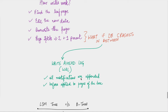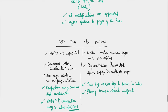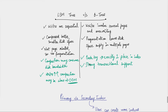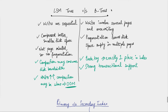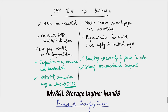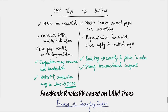Now let's talk about how B-trees differ from LSM trees. For B-trees, think of something like MySQL — its internal storage engine, InnoDB, uses B-trees. For LSM trees, think of something like LevelDB or Facebook's RocksDB.